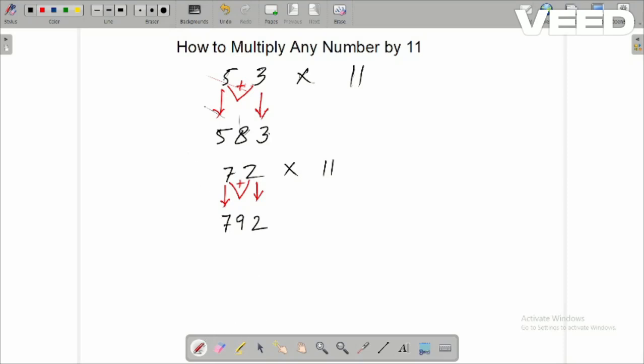But what if the sum of the digits is greater than 9? Say 57 times 11. This is also very easy. See this? First, we write the first digit as it is.